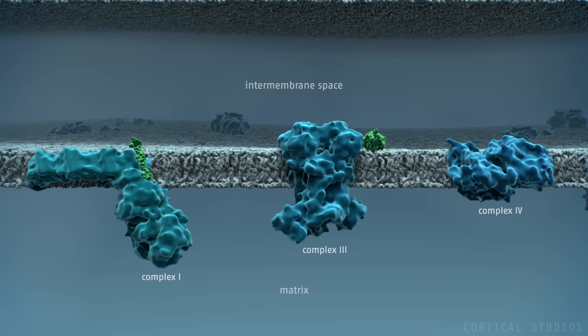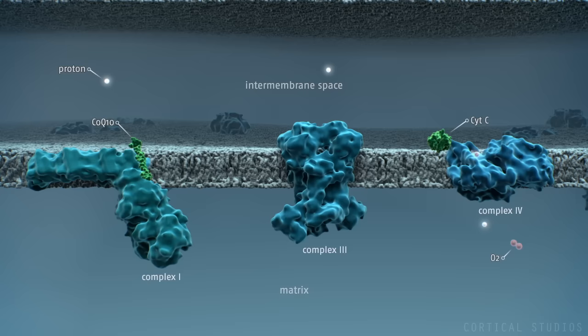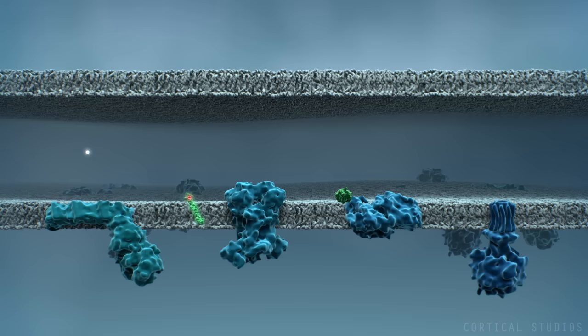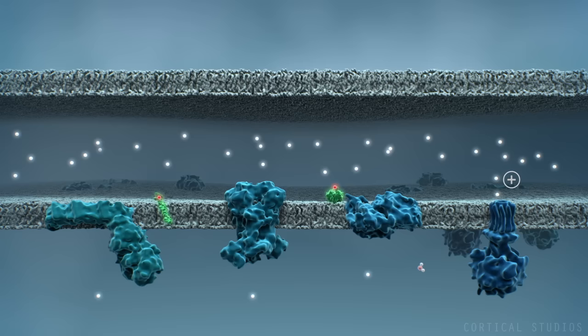Nutrients provide high-energy electrons in the form of NADH, which are used by the protein complexes to pump protons from the matrix to the intermembrane space. This continuous pumping creates a proton gradient, where the positively charged protons are attracted to the more negative matrix.